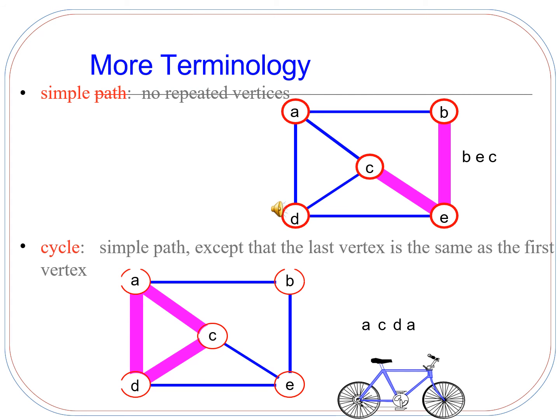What is a simple path? Those paths which do not contain any repeated vertices are known as simple paths. The example shown here goes from B to E, then E to C — this is the simple path that reaches from node B to node C.